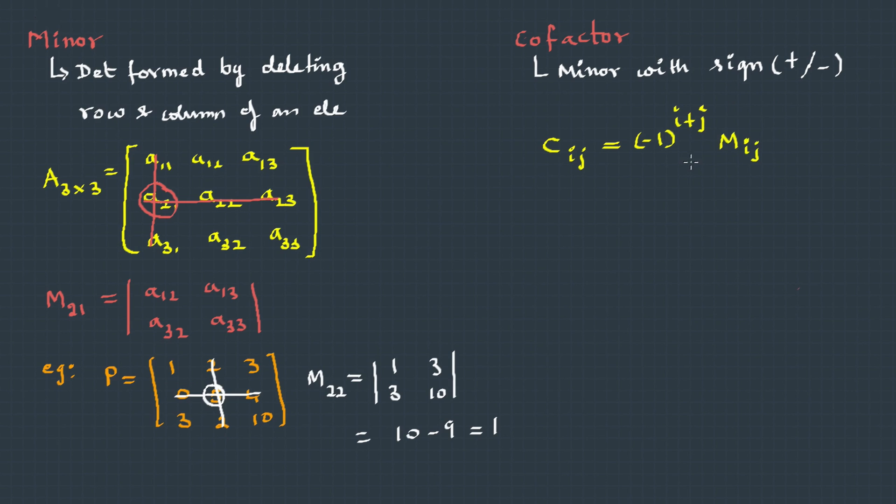For the minor we are taking either positive or negative. It becomes positive if the sum of row position and column position is even, and if at all it becomes odd, this becomes negative.